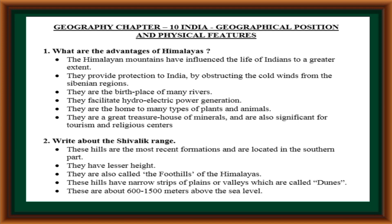Right above the Siwalik range, these hills are the most recent formation and are located in the southern part. They have lesser height and are also called the foothills of the Himalayas. These hills have a narrow strip of plants or valleys which are called dunes. These are about 600 to 1500 meters above the sea level.